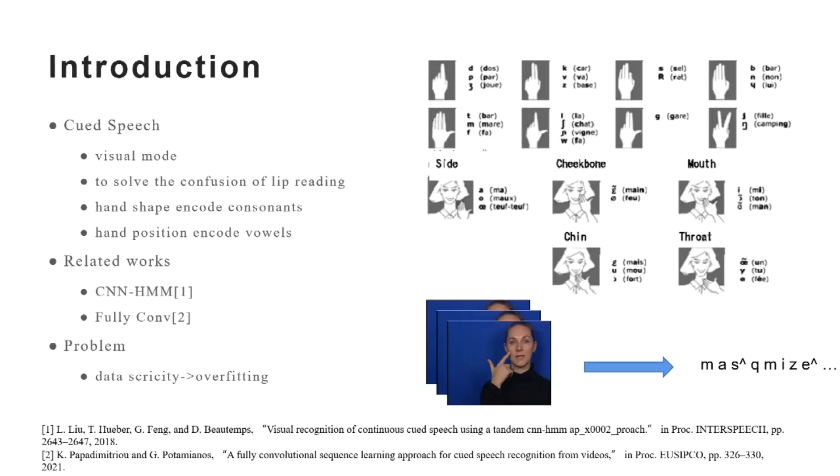However, the performance of the current methods, which are CNN, HMM, and Follycom, were limited by data scarcity, which leads to overfitting in deep neural network training. So we proposed this method to overcome this problem.